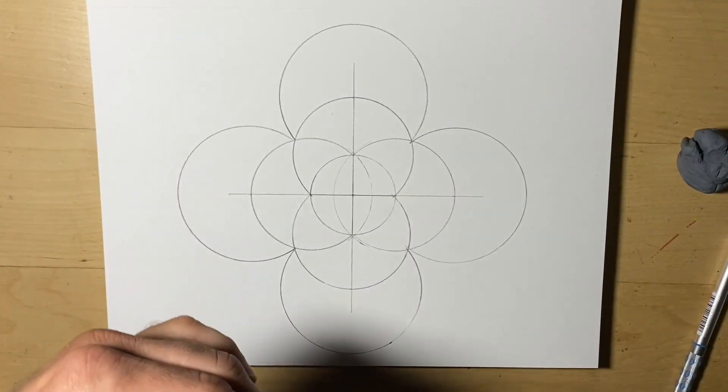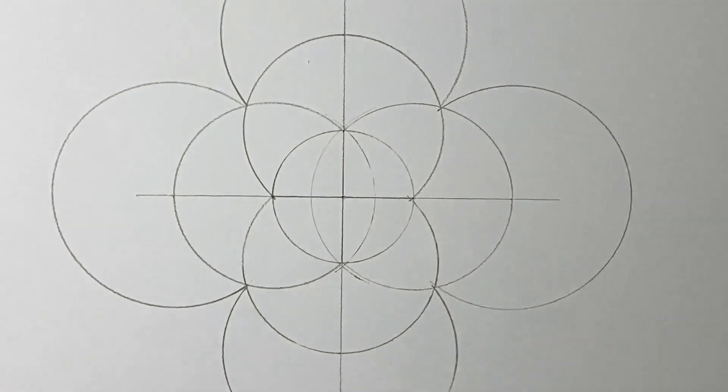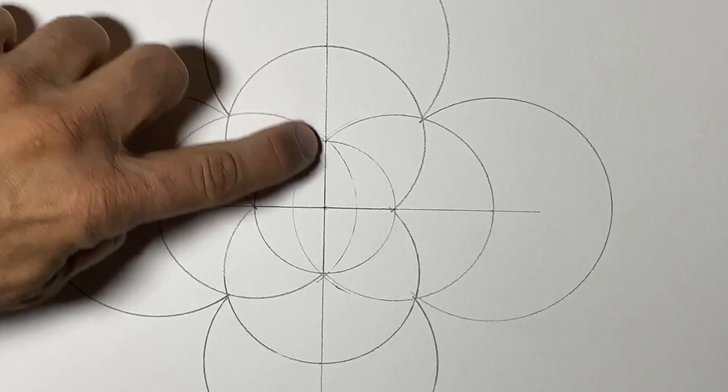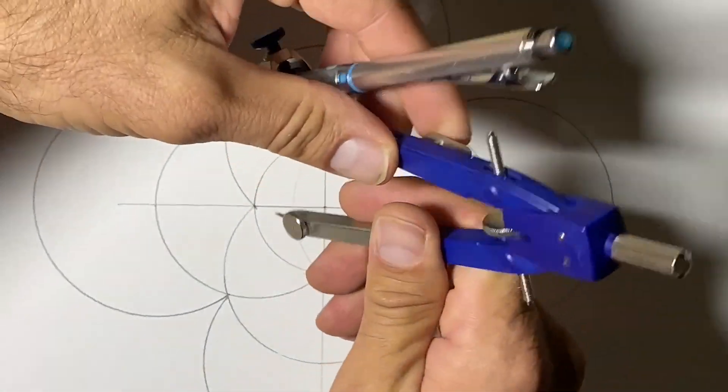We're going to do that perpendicular bisector. We could take one of these lines. We're going to cut it in half.